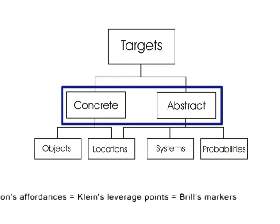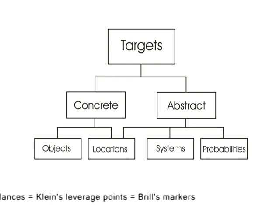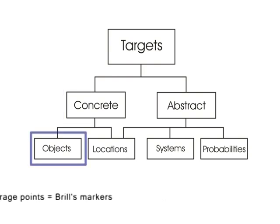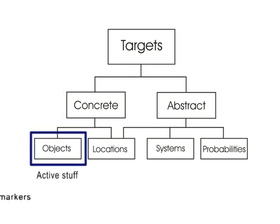Within these categories are four types. Objects are concrete — the physical things that move in the game: teammates, opponents, the ball, and the referee.